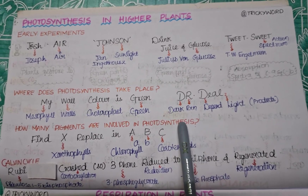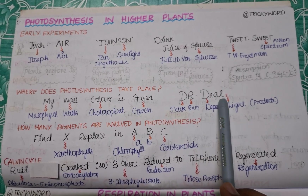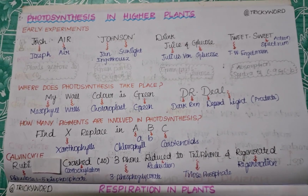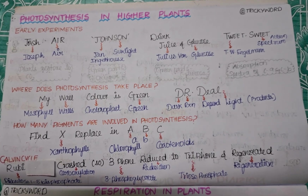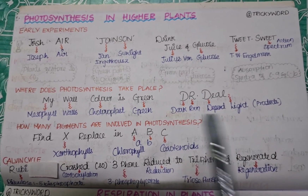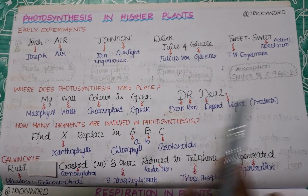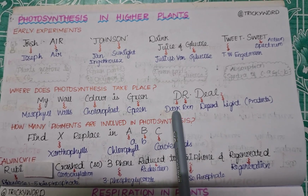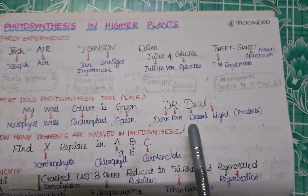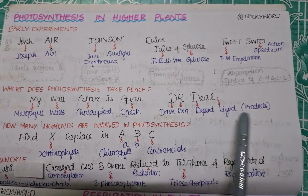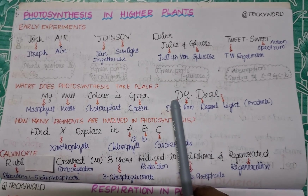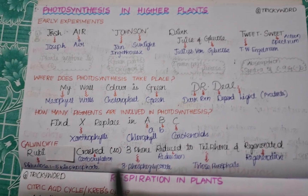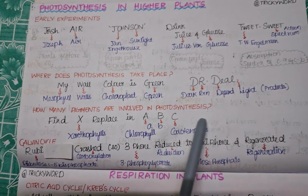The next trick is 'Dr. D' — D for Dark reaction, R for Reaction, and D for Depend, L for Light. There are two types of reactions: light reaction and dark reaction. People often think dark reactions occur in darkness — that is not correct. Light reactions depend directly on light. Dark reactions depend on the products of the light reactions. So dark reactions also need light; they do not occur in the dark.